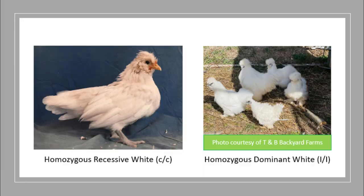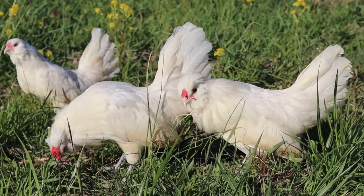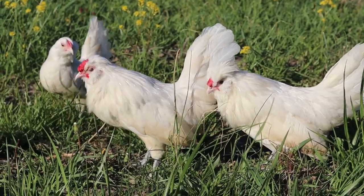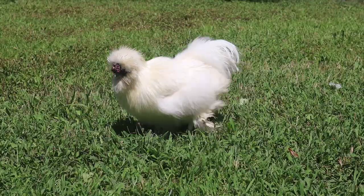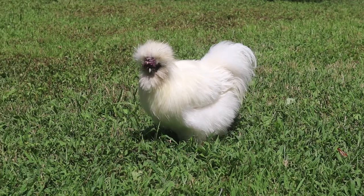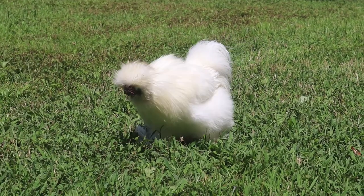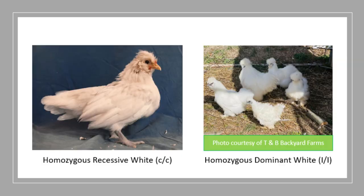Both genes behave quite differently and are on different loci, which is why a chicken can be recessive white and dominant white at the same time. In this video, we will be discussing both types of white, their gene symbols, whether they are dominant, recessive, incomplete dominant, or co-dominant, how to tell which type of white your chicken has, and more.